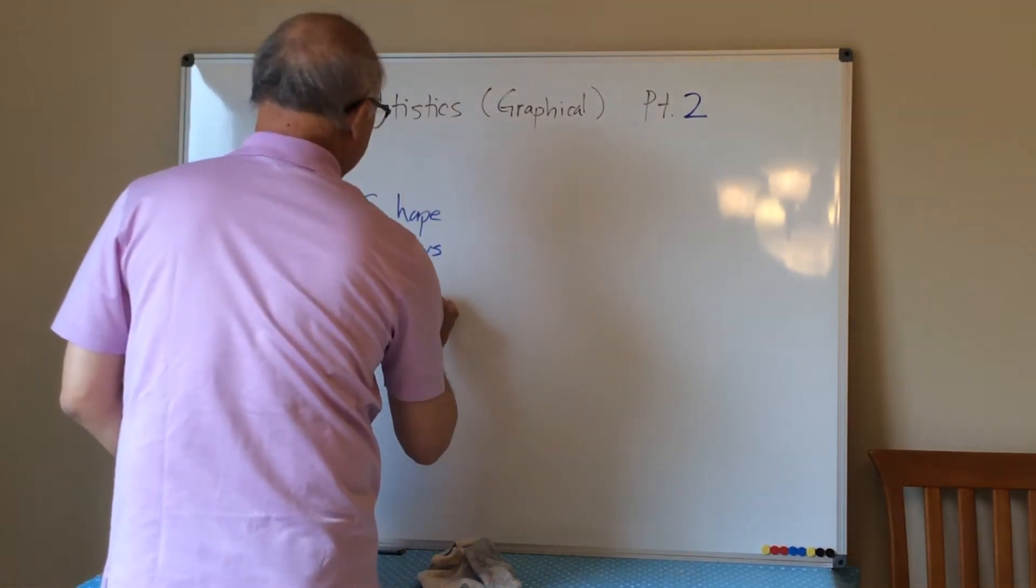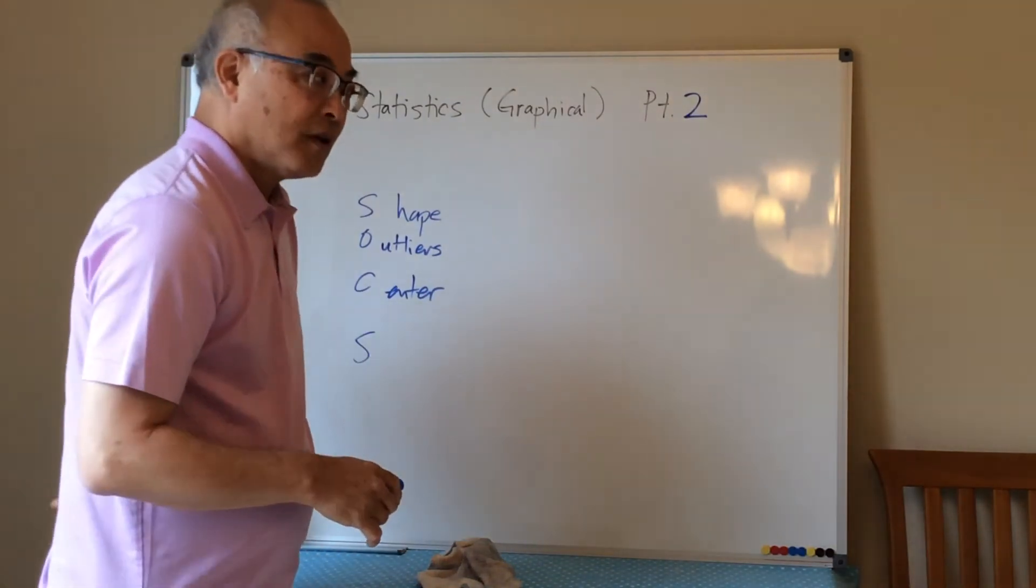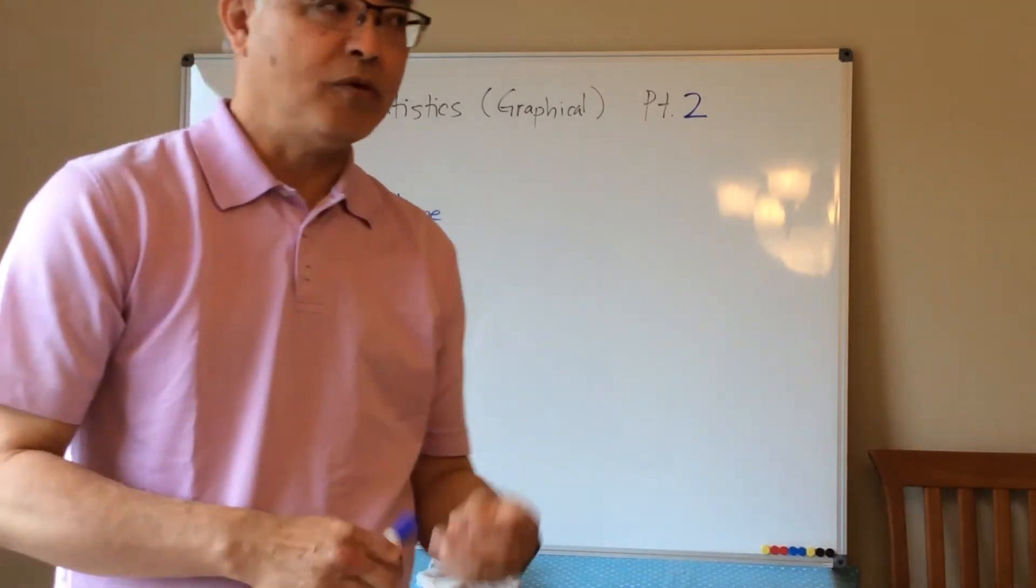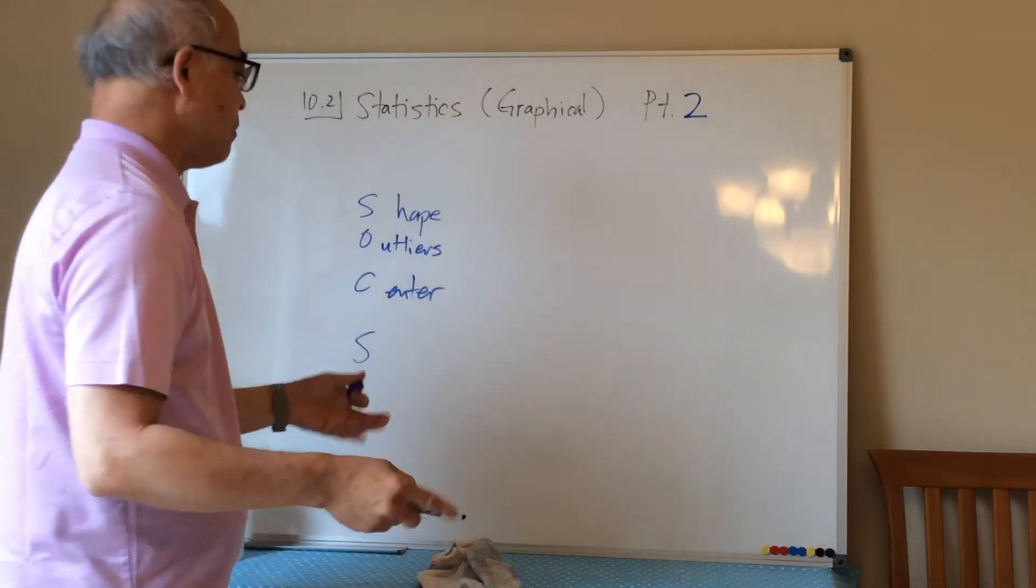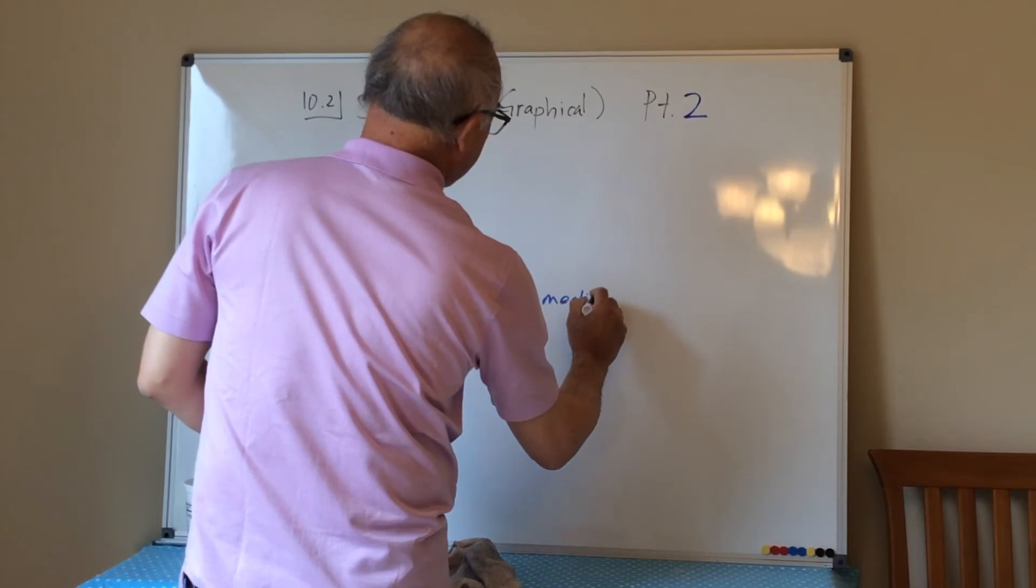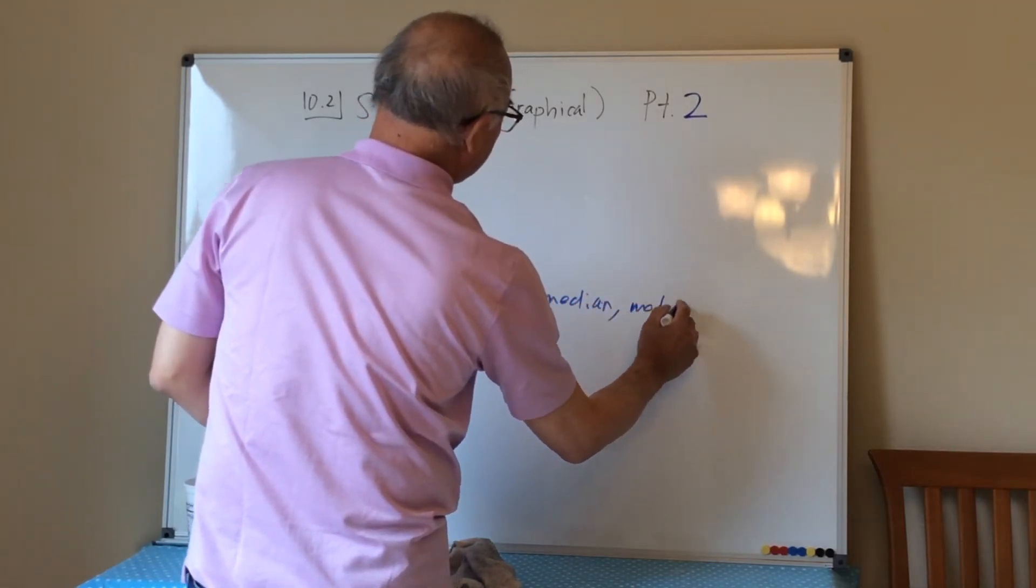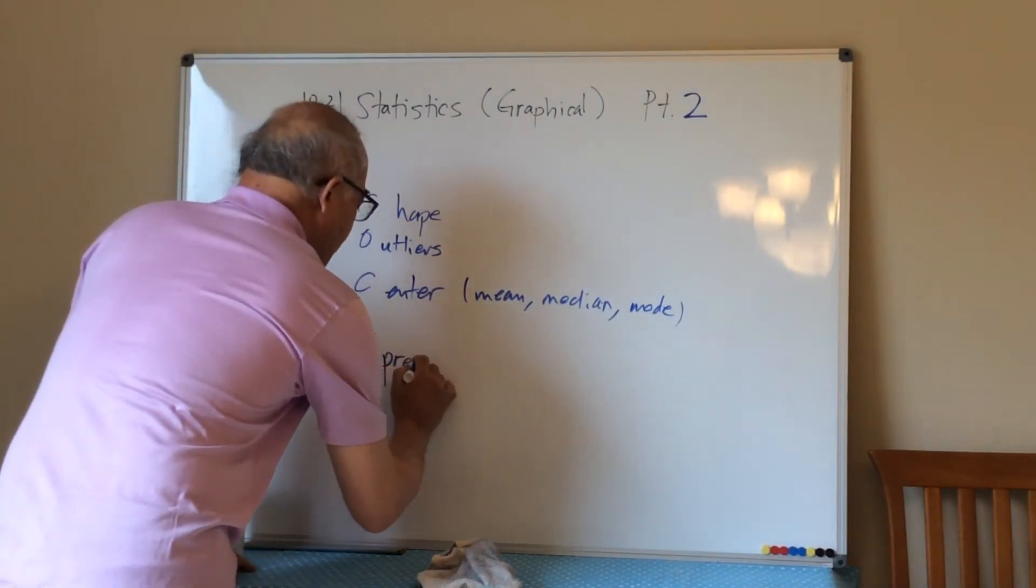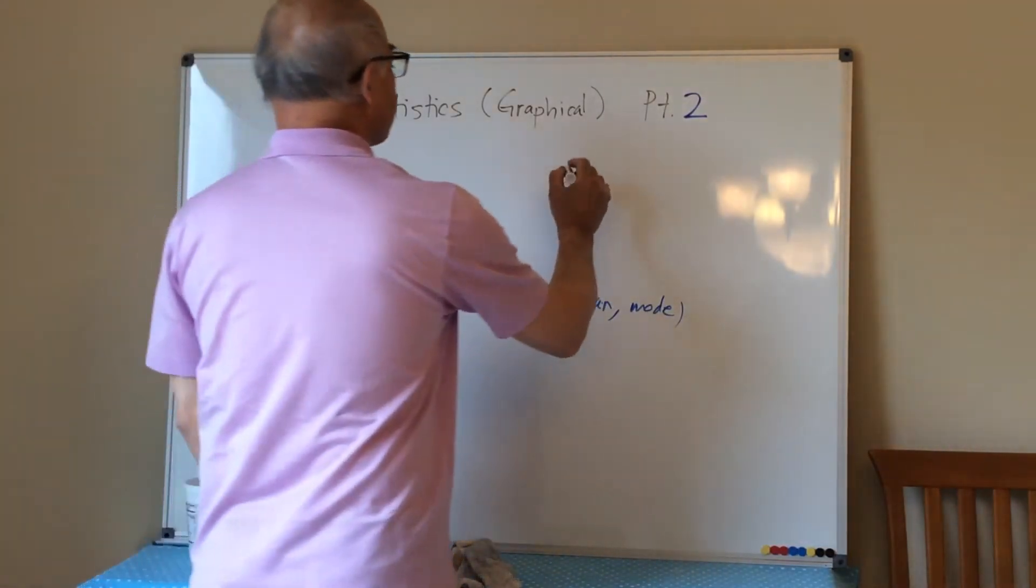C is the center. When we talk about the center, we're talking about either the mean, median, and mode. We'll go into more detail about that later on, but these are the three M's. The center would be mean, median, or mode.